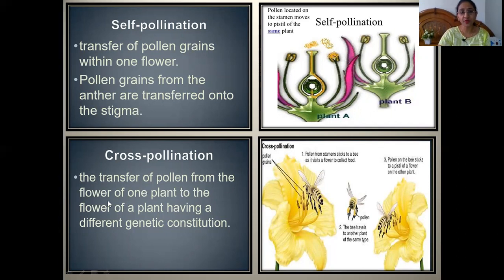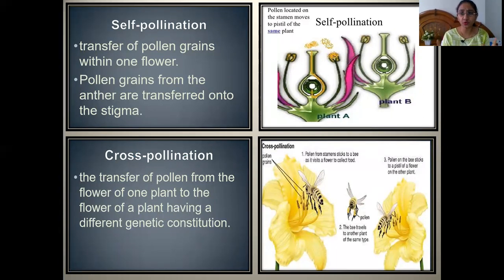In cross-pollination, the transfer of pollen occurs from the flower of one plant to the flower of a plant having a different genetic constitution. Two different plants with different genetic constitutions are involved, and there can be different modes — wind, water, or insects. Self-pollination is a simpler way, whereas cross-pollination is more complicated, with different factors involved.